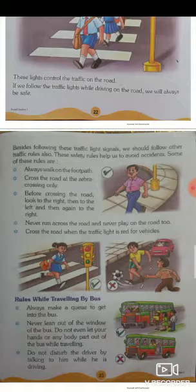Some of these rules are: First, always walk on the footpath. We need to cross the road at the zebra crossing only. We need to cross the road when the traffic light is red for vehicles.